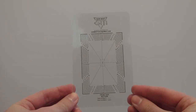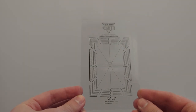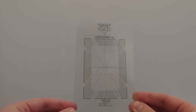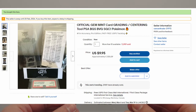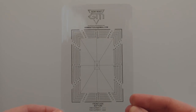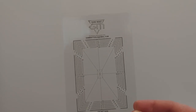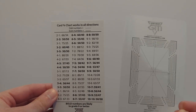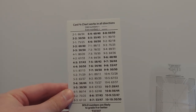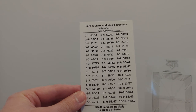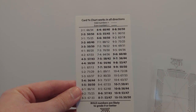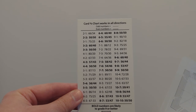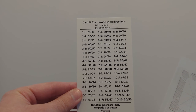This is called a centering tool. This one is from a company called Gem Mint — I picked it up off eBay for around $10. It essentially has a grid on there with some number values that you place over the card. It comes with a card chart, so these numbers will essentially correspond with a ratio that tells you how centered or off-centered the card might be. 50/50 is obviously the best centering — that's what you want to go for.